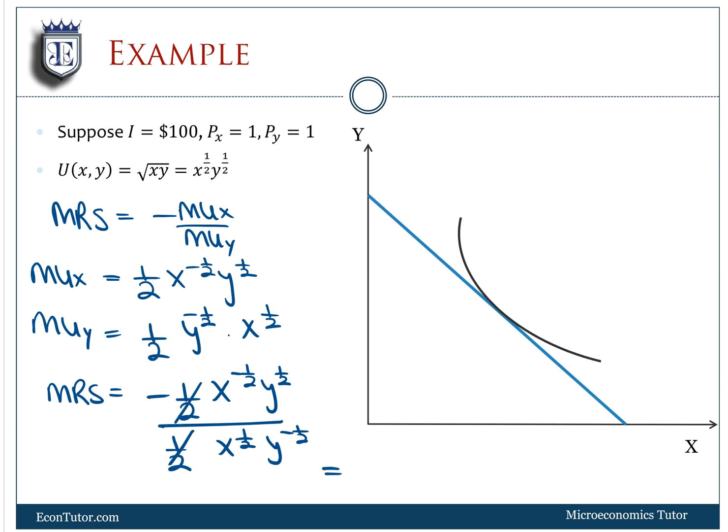When I simplify this, I am going to get negative Y to the one half times Y to the one half, because I take it in the numerator. And this is X to the one half times X to the one half. So what I get is negative Y over X.